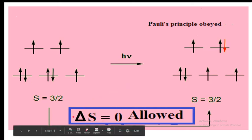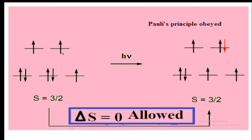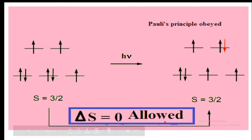Delta S equals zero means a transition is allowed. For example, if a system has a total spin of 3/2 with three unpaired electrons each with plus half spin, and an electron is promoted to a higher orbital while retaining its spin (down arrow remains down arrow), then delta S is still 3/2 — the change in S is zero, so it is an allowed transition.